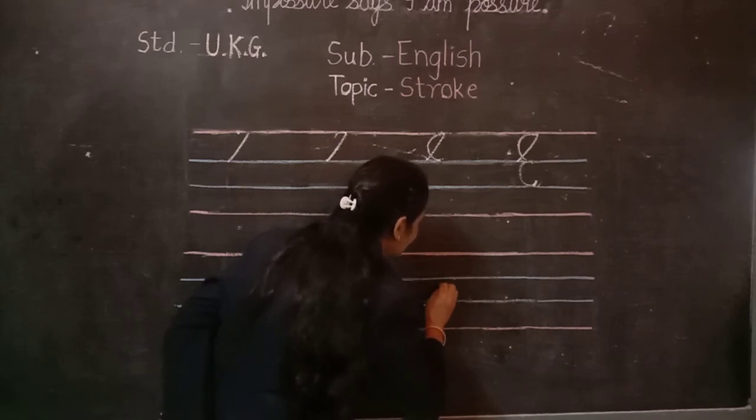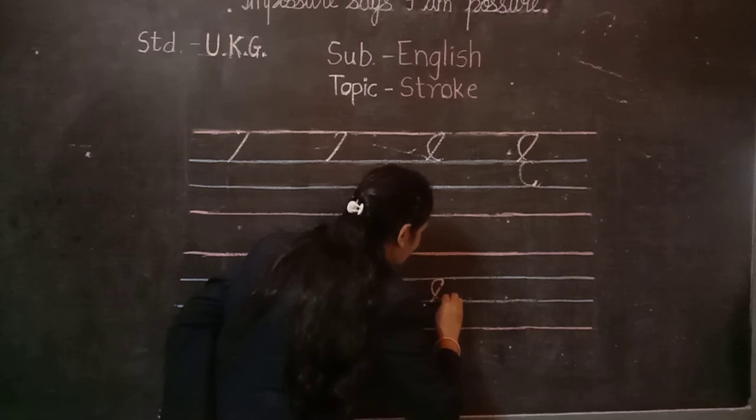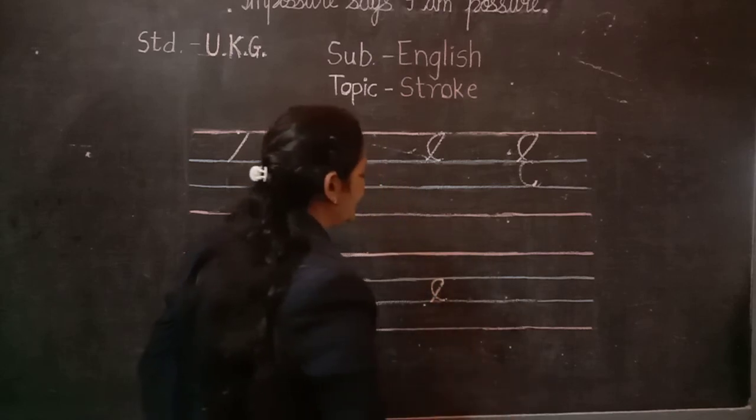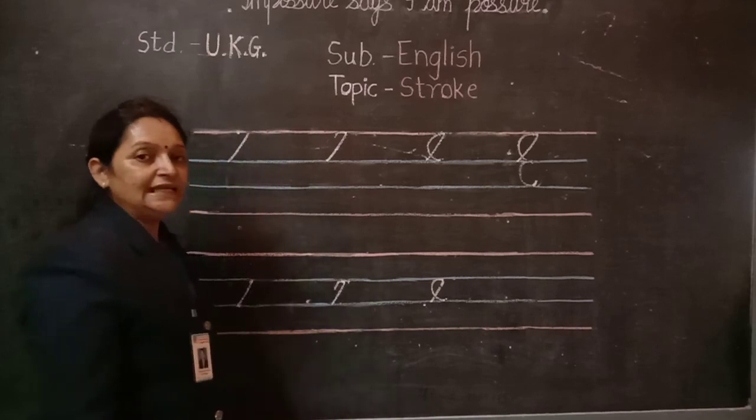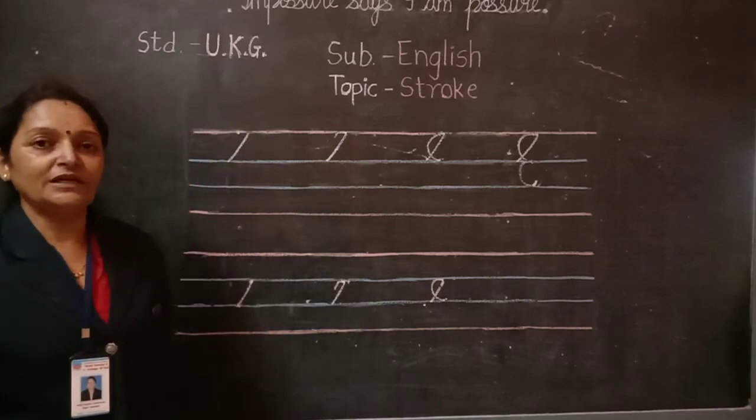Slanting line. Second blue line to blue line, and turn curve up. Touch to the second blue line. Which letter is this? Small cursive E. Small cursive E.